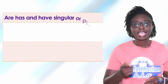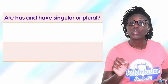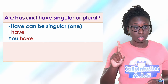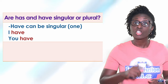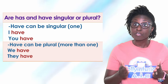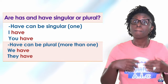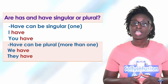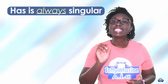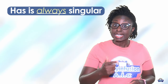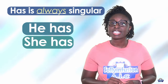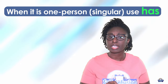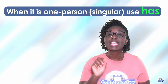Are has and have singular or plural? Have can be singular — one: I have, you have. Have can be plural — more than one: we have, they have. Has is always singular: he has, she has, it has. When it is one person, singular, use has.